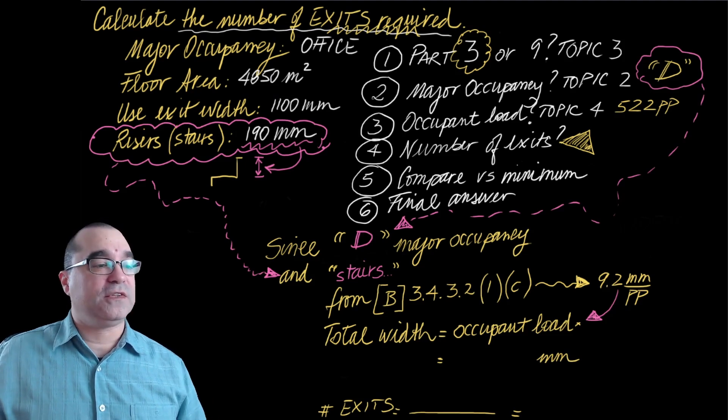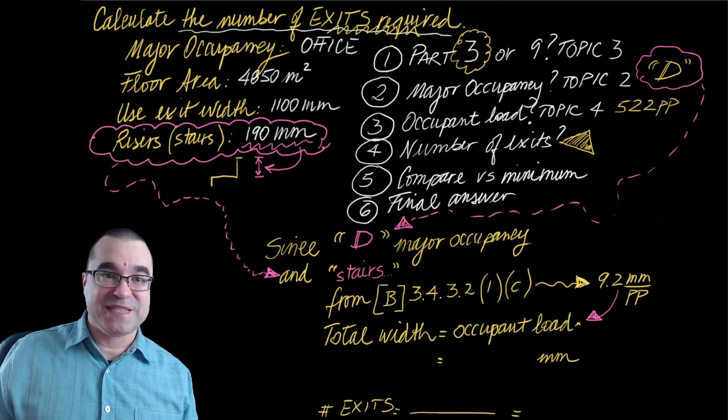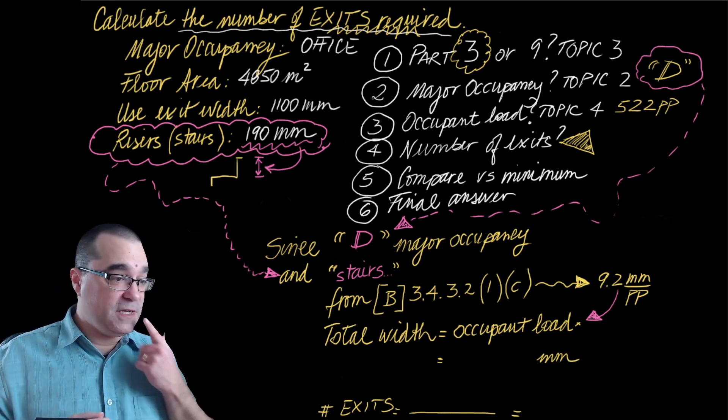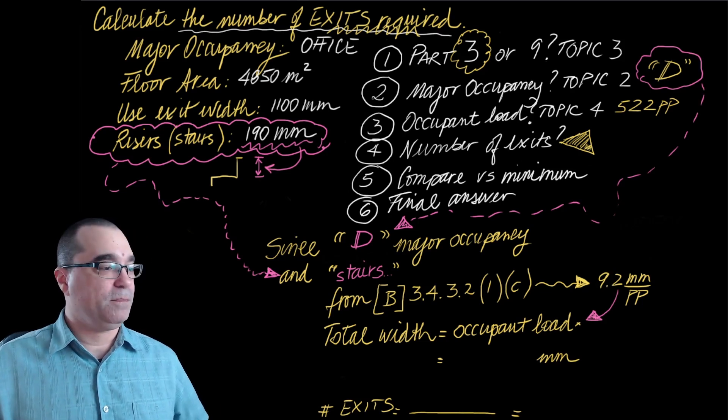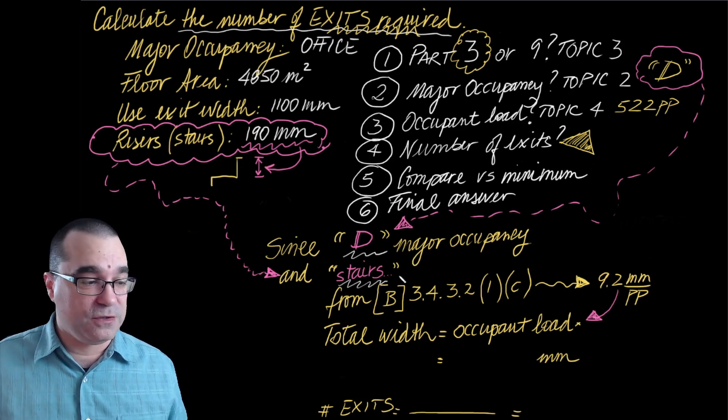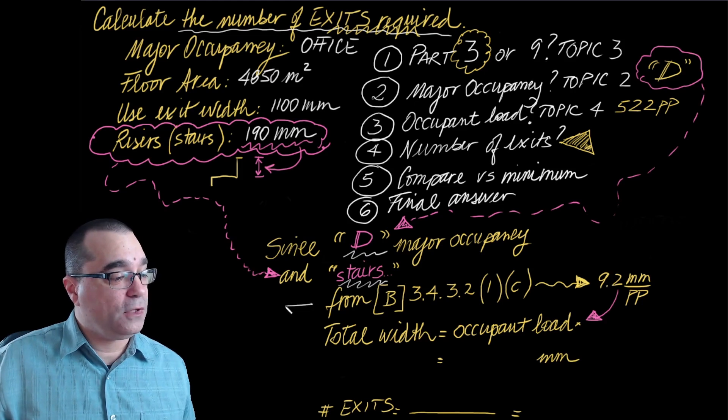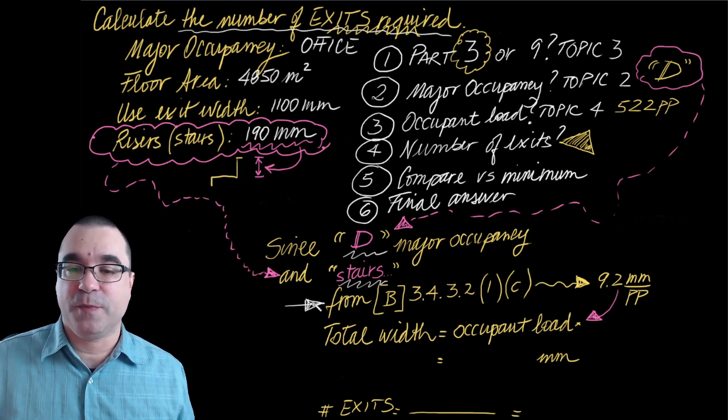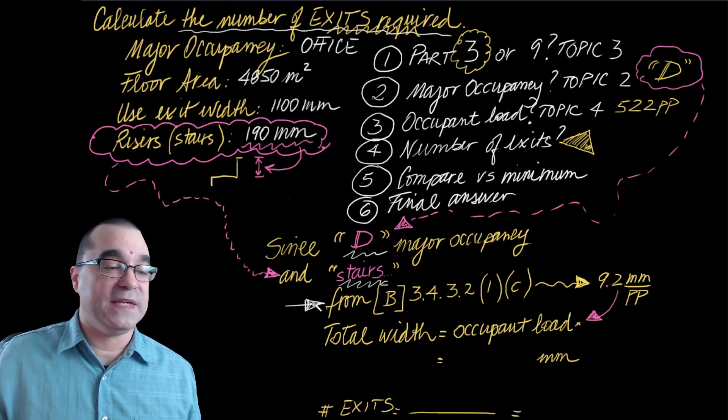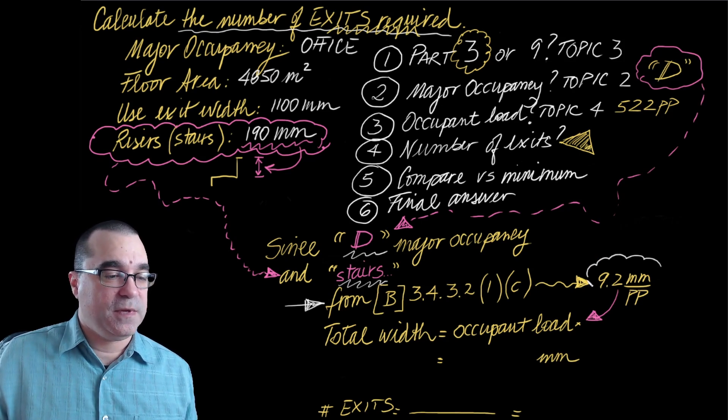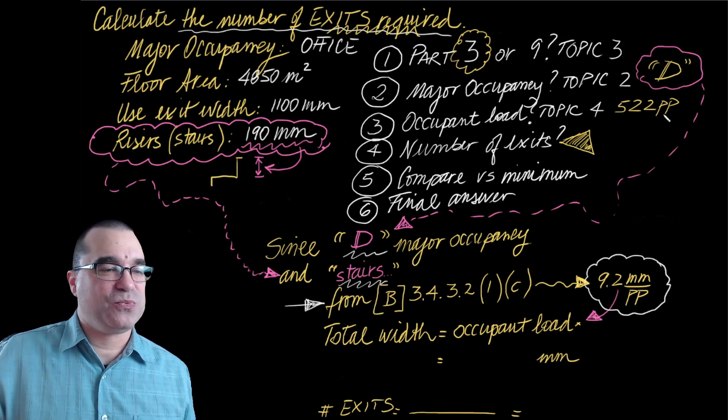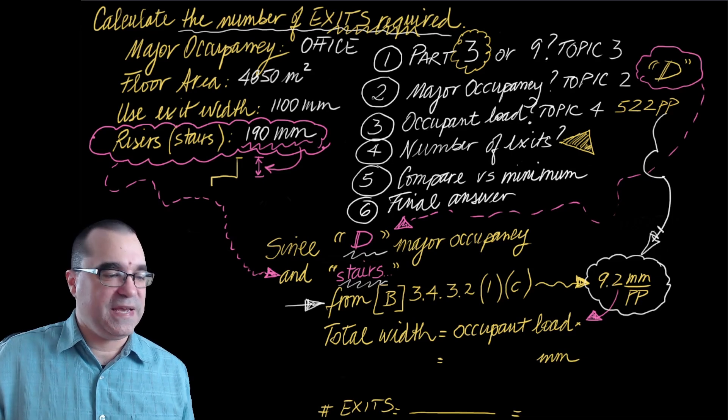For step number four, we have to determine what the number of exits is going to be based on the information we have here. Just based on the geometry and the occupant load, what we have here. So since this is a D major occupancy, and because we're looking at the width of stairs and the number of stairs, the appropriate location in the Ontario Building Code where to get this information is under clause 3.4.3.21c, which says that the minimum width for each person is going to be 9.2 millimeters. So that's where the occupant load comes into play.